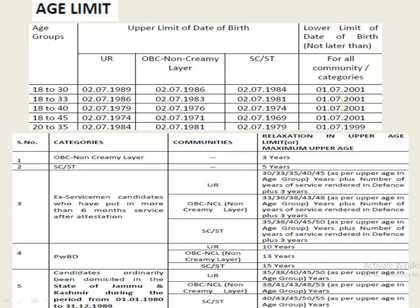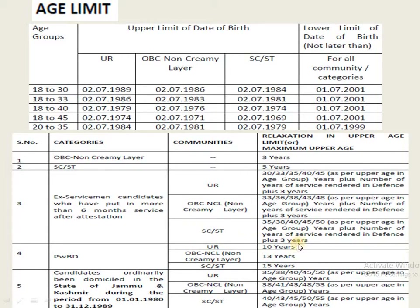For the age limit, different age groups are mentioned for different categories. Date of birth ranges are notified for General, OBC, and SC/ST categories — please go through them carefully. Age relaxation: OBC candidates get 3 years, SC/ST candidates get 5 years. For ex-servicemen under General category, relaxations are given at various levels such as 33, 35, 40, 45 years, with further provisions for OBC.